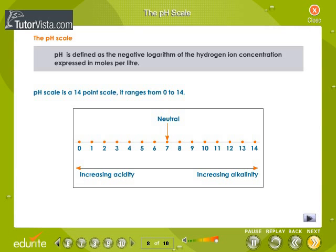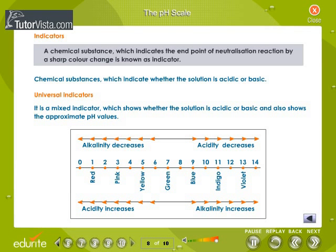The pH Scale: pH is defined as the negative logarithm of the hydrogen ion concentration expressed in moles per liter. The pH scale is a 14-point scale ranging from 0 to 14. A chemical substance which indicates the end point of a neutralization reaction by a sharp color change is known as an indicator.